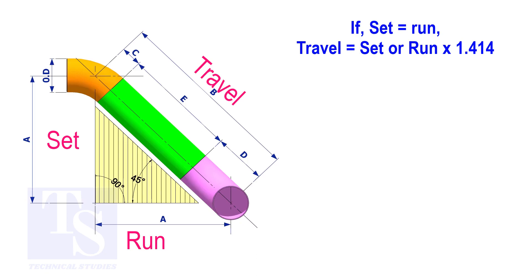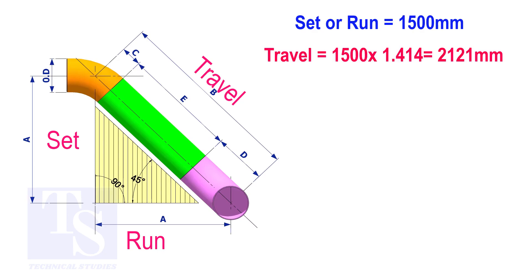Assume that the value of the set is 100. The value of the travel is 100 multiplied by 1.414 equals 141.4. Try another example. Suppose the value of the set or the run is 1500 millimeters. The value of the travel will be 1500 multiplied by 1.414 equals 2121 millimeters.